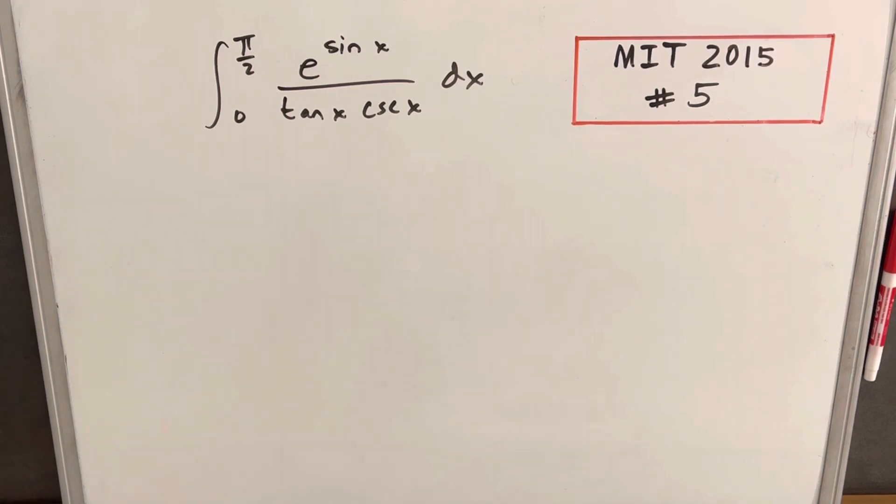Hey, I have another integral here from MIT 2015, problem number 5. We have the integral from 0 to pi over 2 of e to the sine x over tan x cosecant x dx.